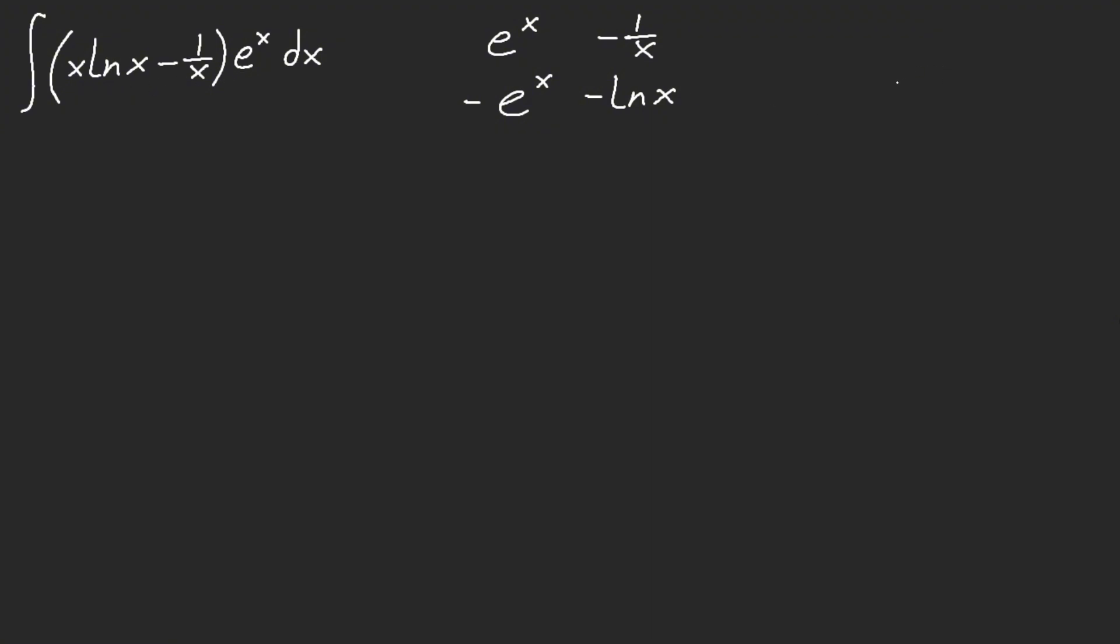So, unfortunately, we have to deal with that one, x ln of x, e to the x. So, it looks like we're going to do a double semi-integration by parts. So, we're going to go ahead, derive this. This is 1 plus ln of x,